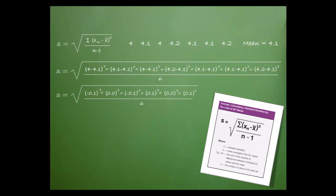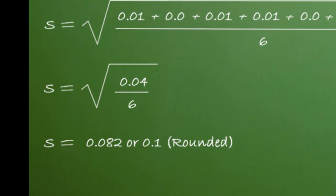In the next step, the subtraction occurs. The values are squared and added. The division occurs and the square root is taken. The standard deviation is .082 or 1 tenth when rounded.